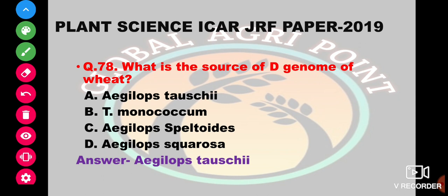What is the source of the D genome of wheat? The options are Aegilops tauschii, Triticum monococcum, Aegilops plantoidis, or Aegilops squarrosa. The answer is Aegilops tauschii.